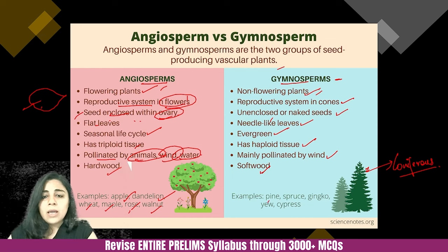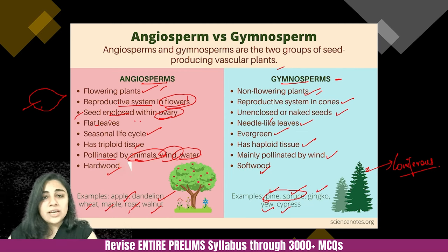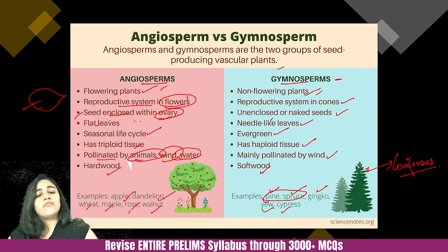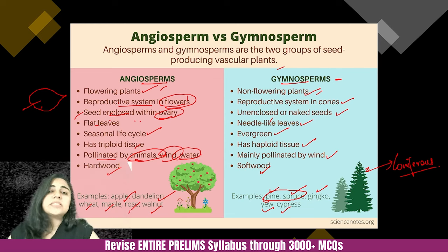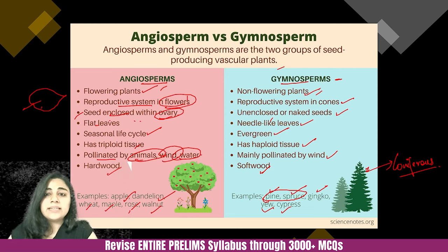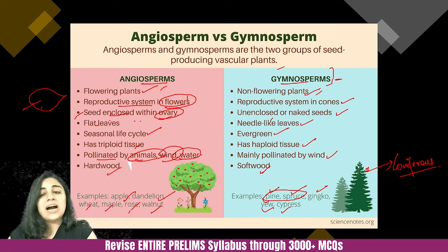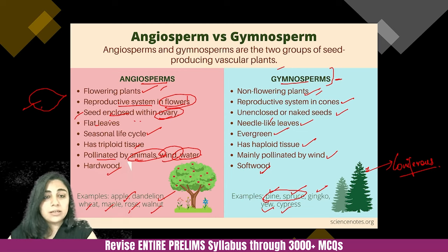What are examples of gymnosperms? Pine, spruce, yew, cypress, and ginkgo. Pine and spruce are well-known examples of coniferous plants — those are gymnosperms. India has a very high variety of angiosperms; 40% of our plant variety is angiosperms. Don't think the rest of the 60% would be gymnosperms, because as we move forward, you will see there are more varieties and more classifications of plants as well.